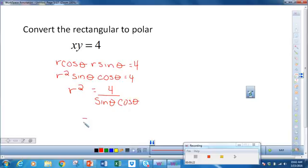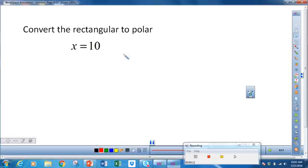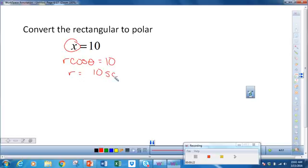And our final one is x = 10. And that's simply x = r cos θ. So therefore, r = 10/cos θ, we can write as 10 sec θ.